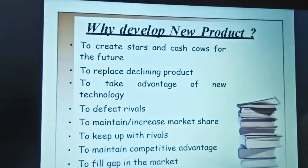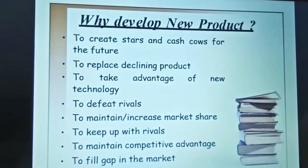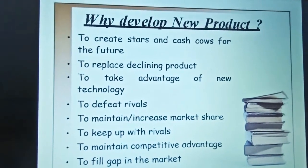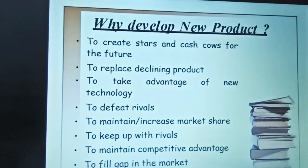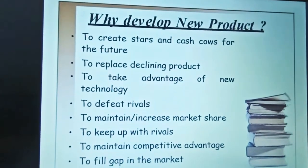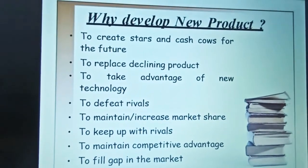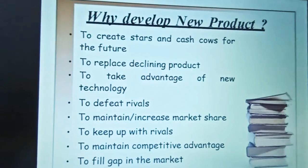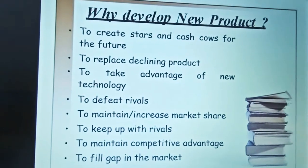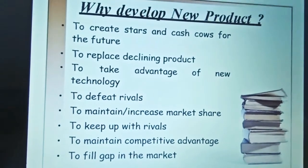I made a special video on the BCG matrix where I describe the meaning of star and cash cow. A star is a product where both demand and market share are present. A cash cow means that at present you get enough profit margin, but in the future there are fewer chances of continued revenue.